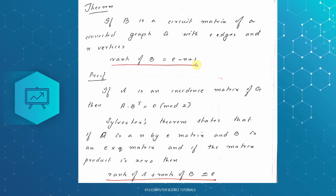That is the theorem. I am going to prove it on the next step. If you have a connected graph G with an incidence matrix, the circuit matrix will combine with the theorem. If A is an incidence matrix of G, then A into B transpose is equal to zero. B is the corresponding circuit matrix, so A into B transpose is equal to zero.